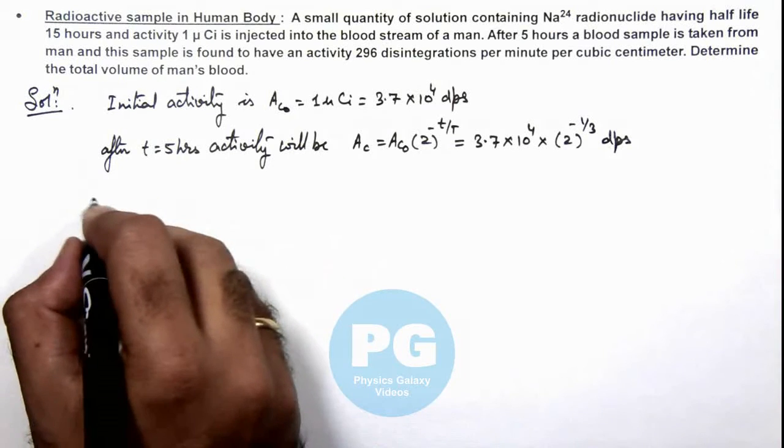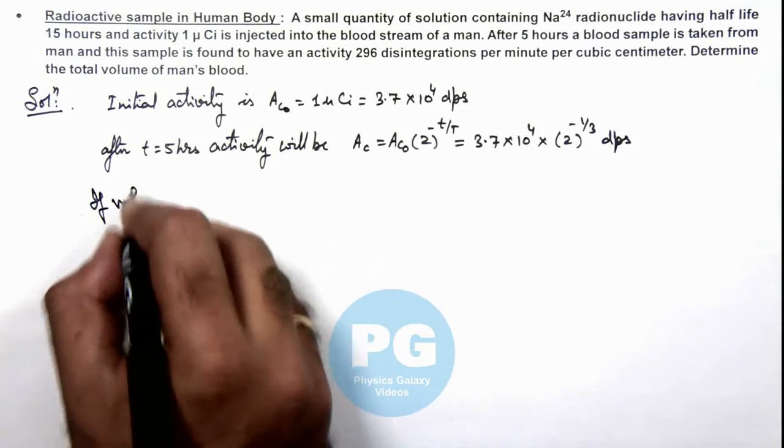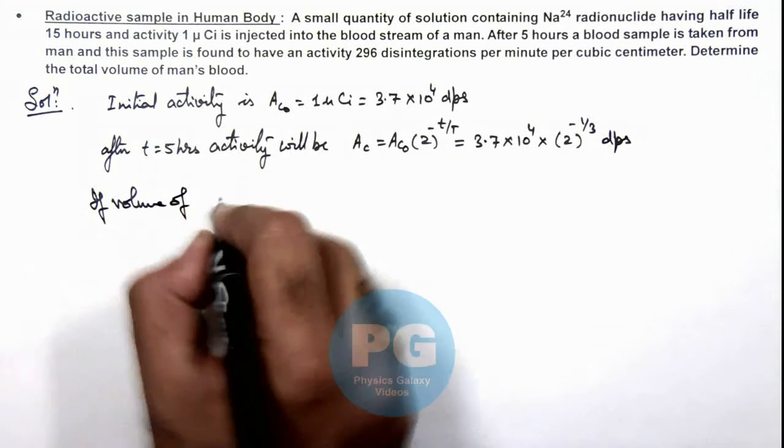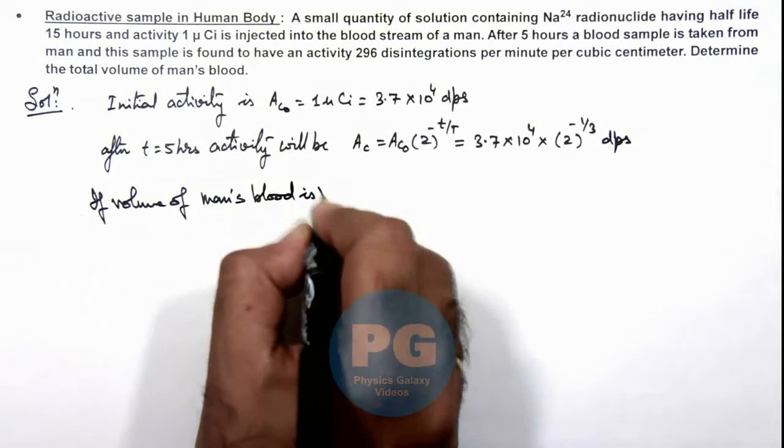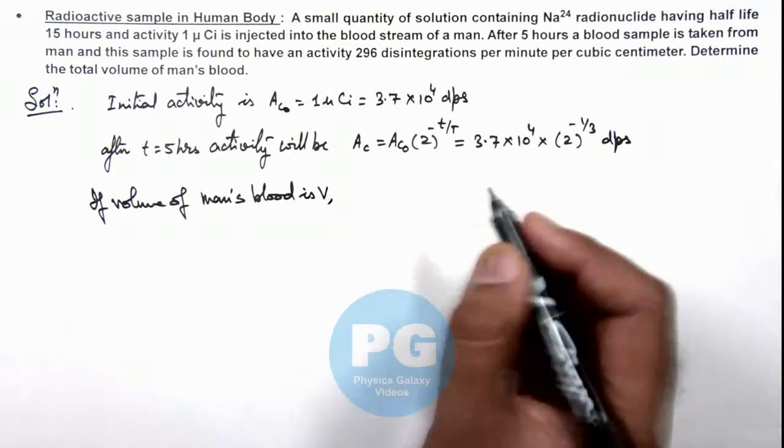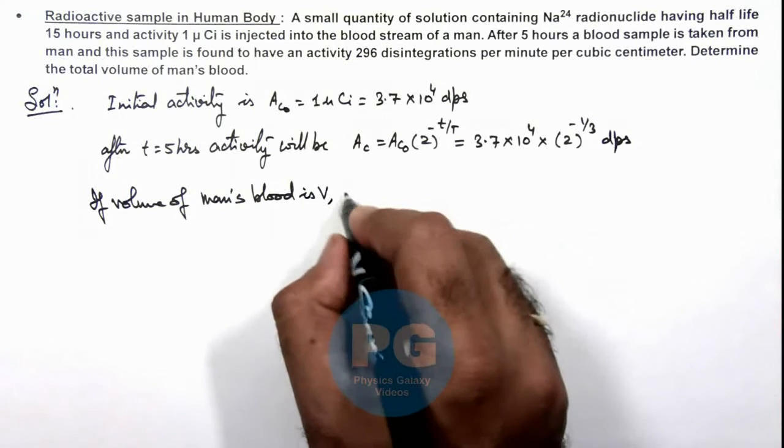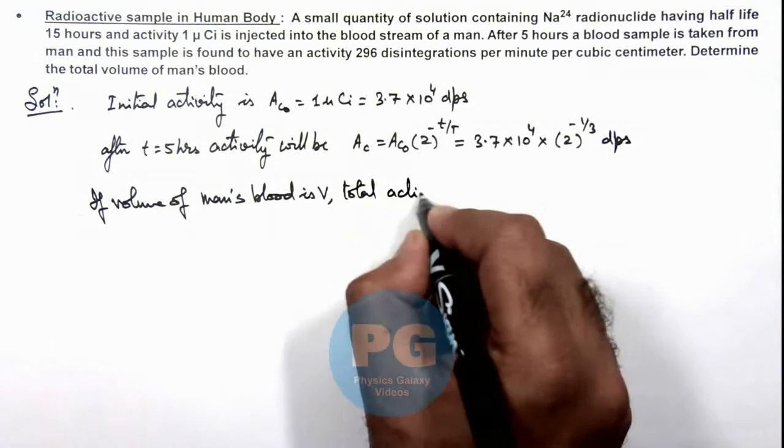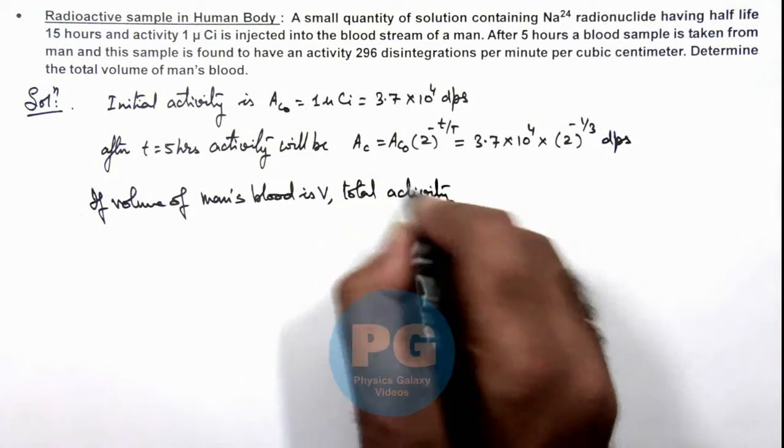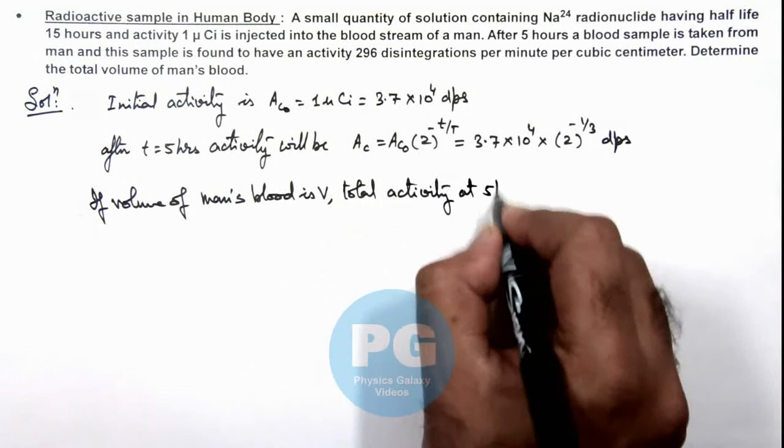If we consider the volume of man's blood is V, we can write the total activity at 5 hours is...